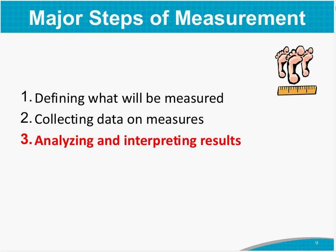The major steps of improvement are: define what you will be measuring. When we started this project and the on-site training, we talked about measures — some of the measures you provide to the AFIA team regularly, some are the actual rate of falls, while others are measures of process. You committed to which kinds of measures you were going to collect, defined what a fall is, and each hospital decided on that definition so that you're all collecting the same information. Then you collect the data, analyze, and interpret those results.